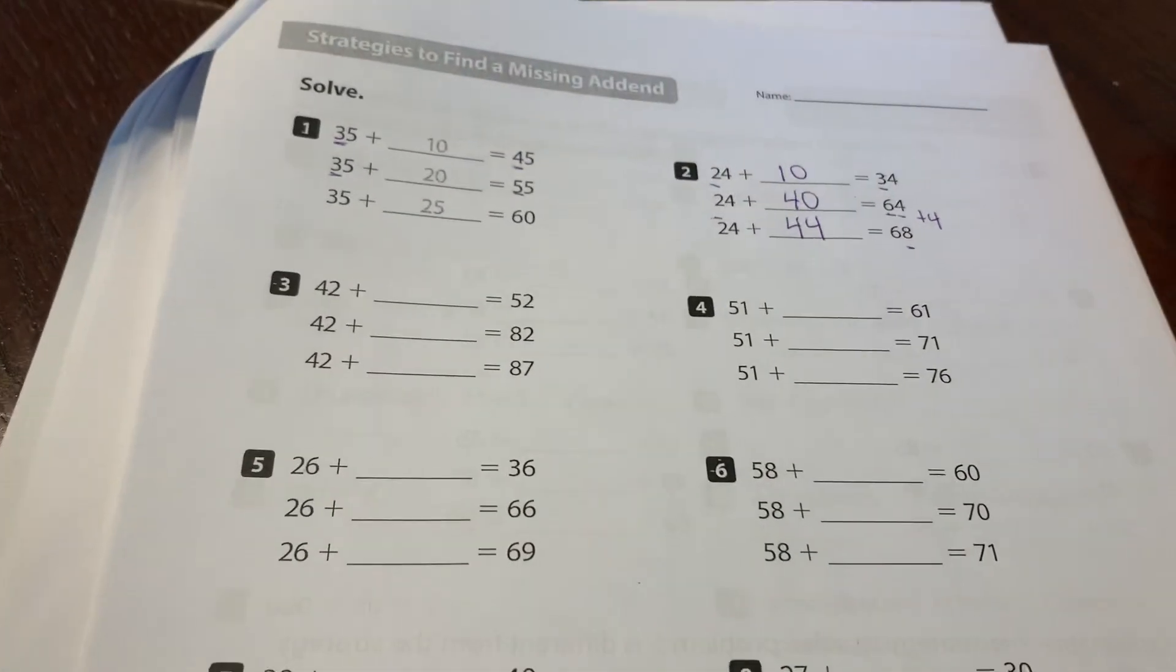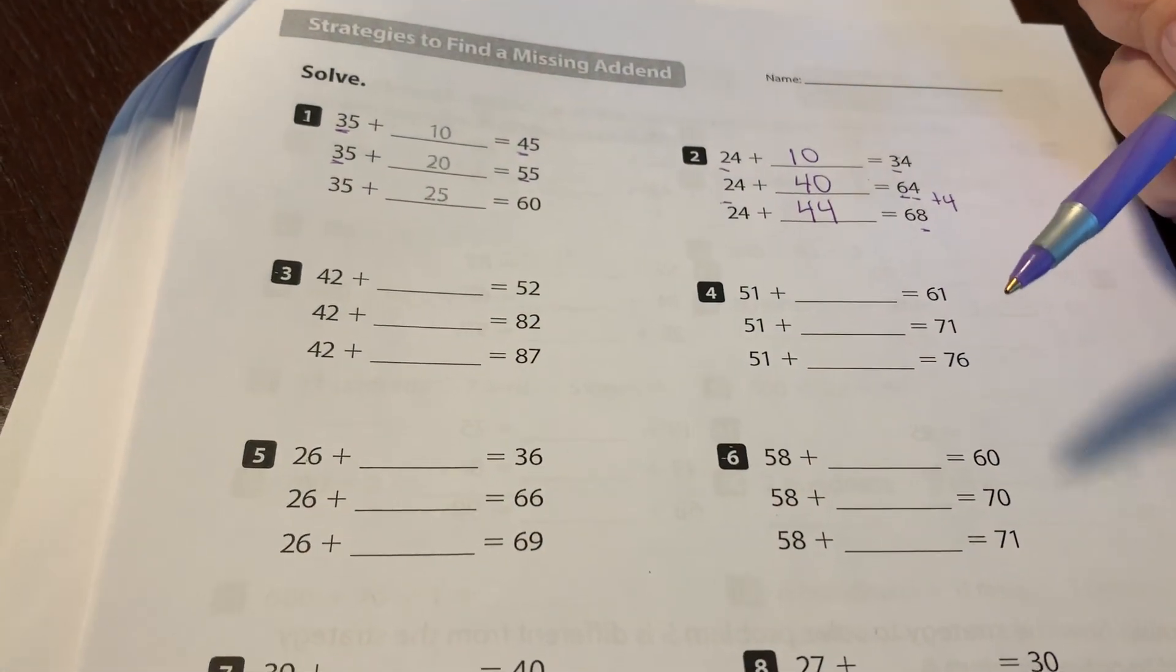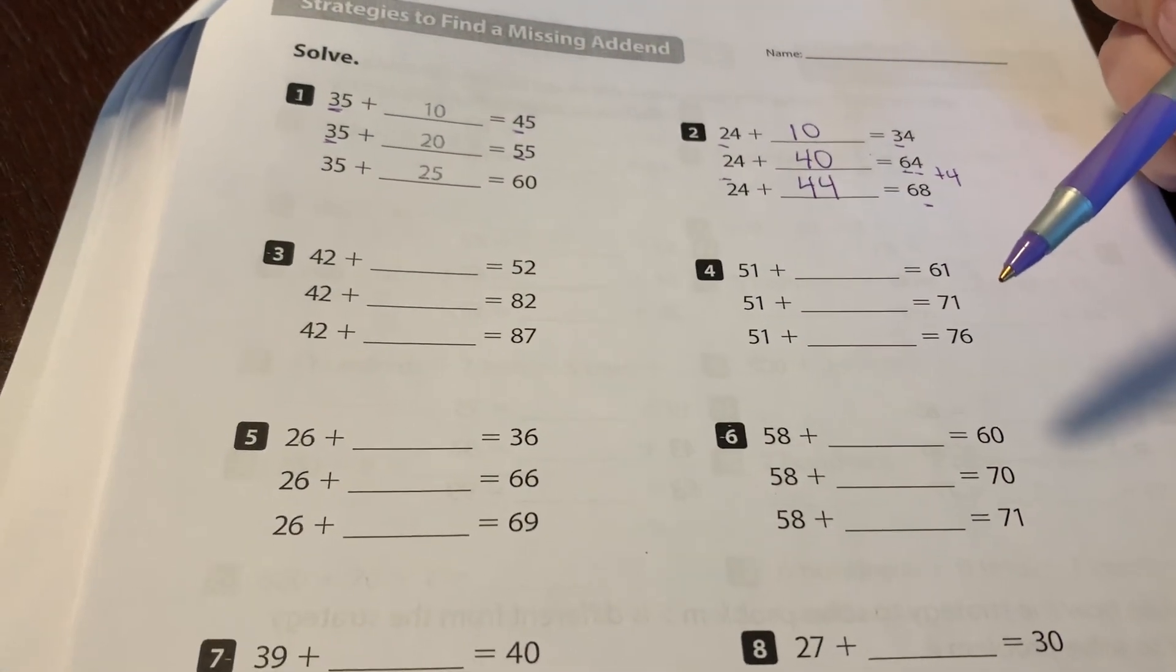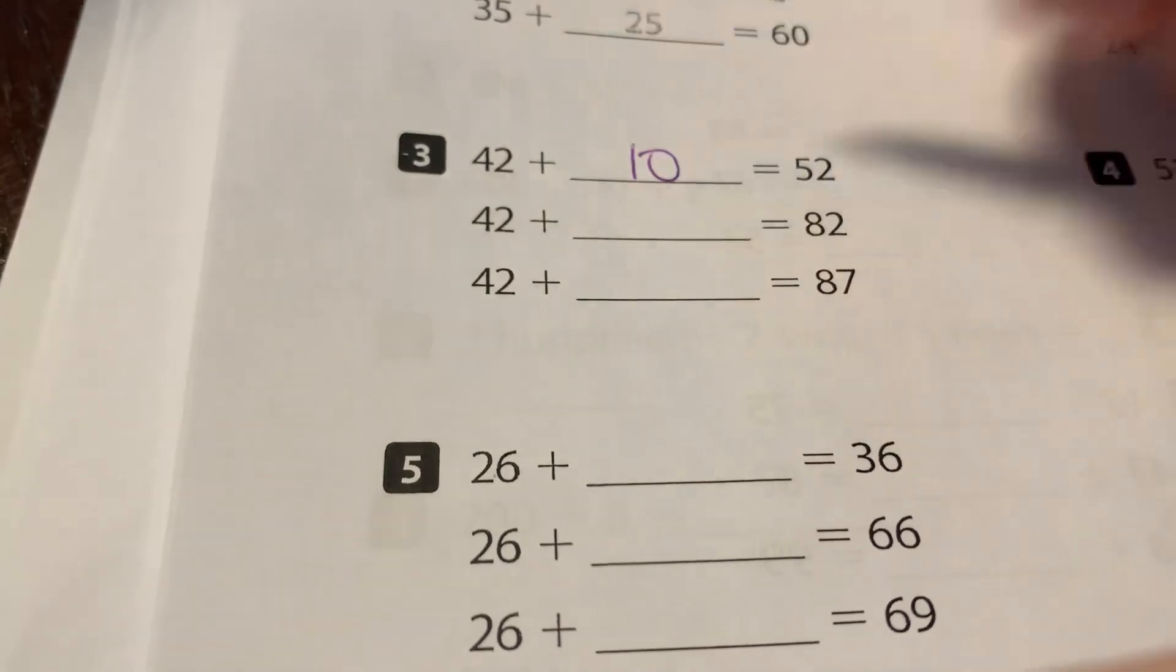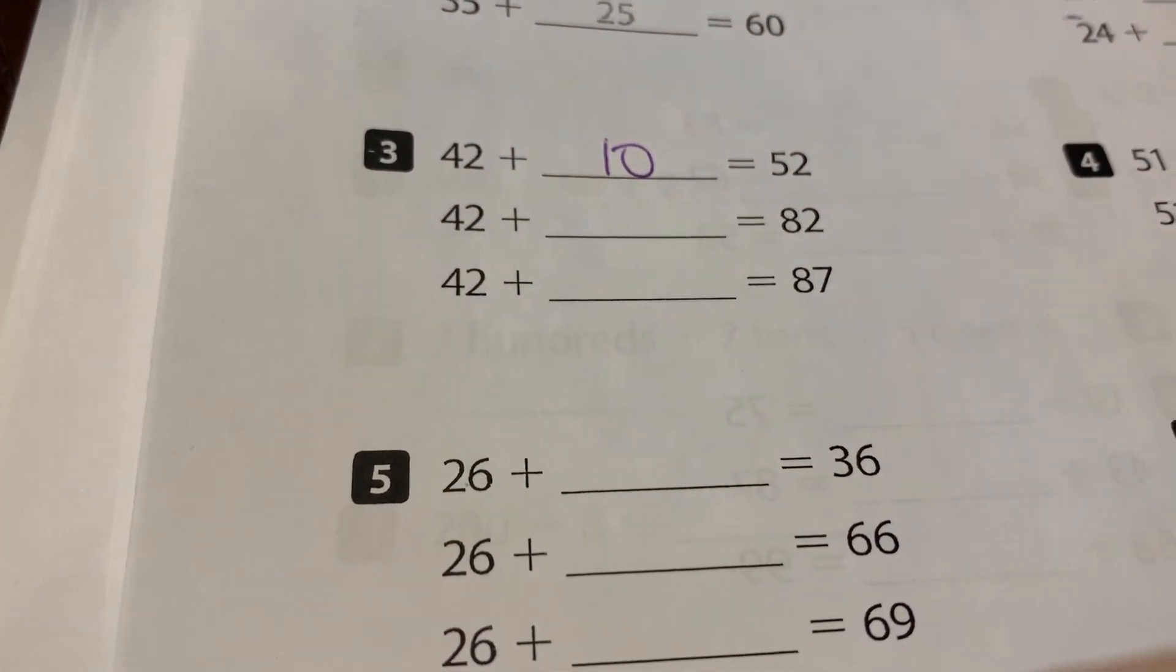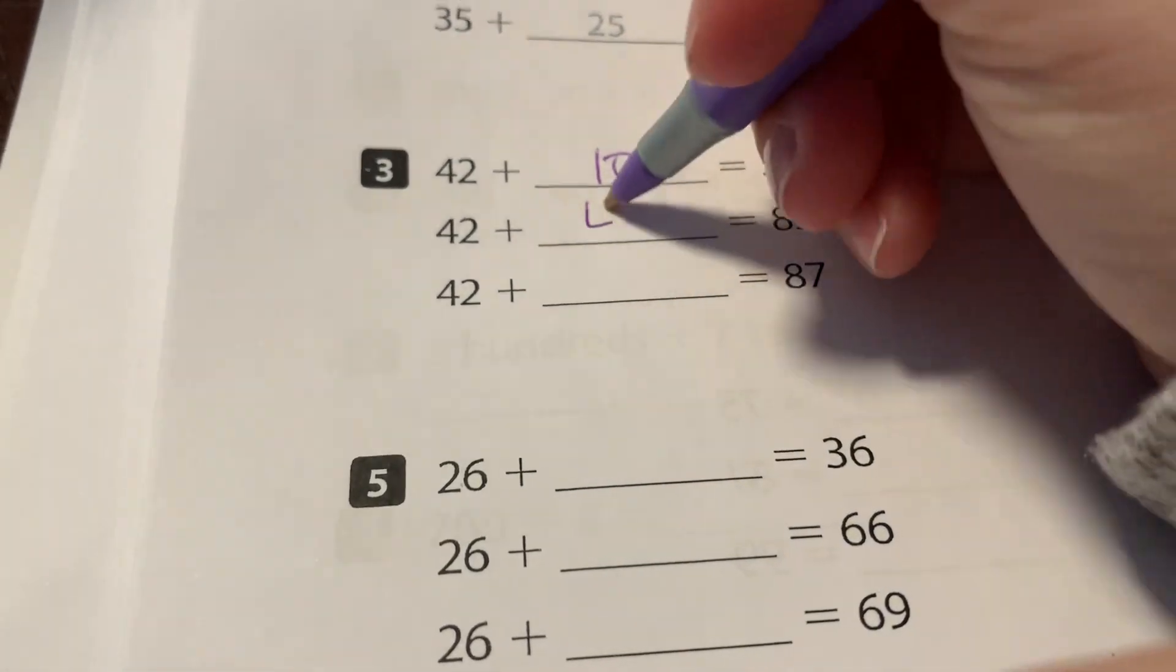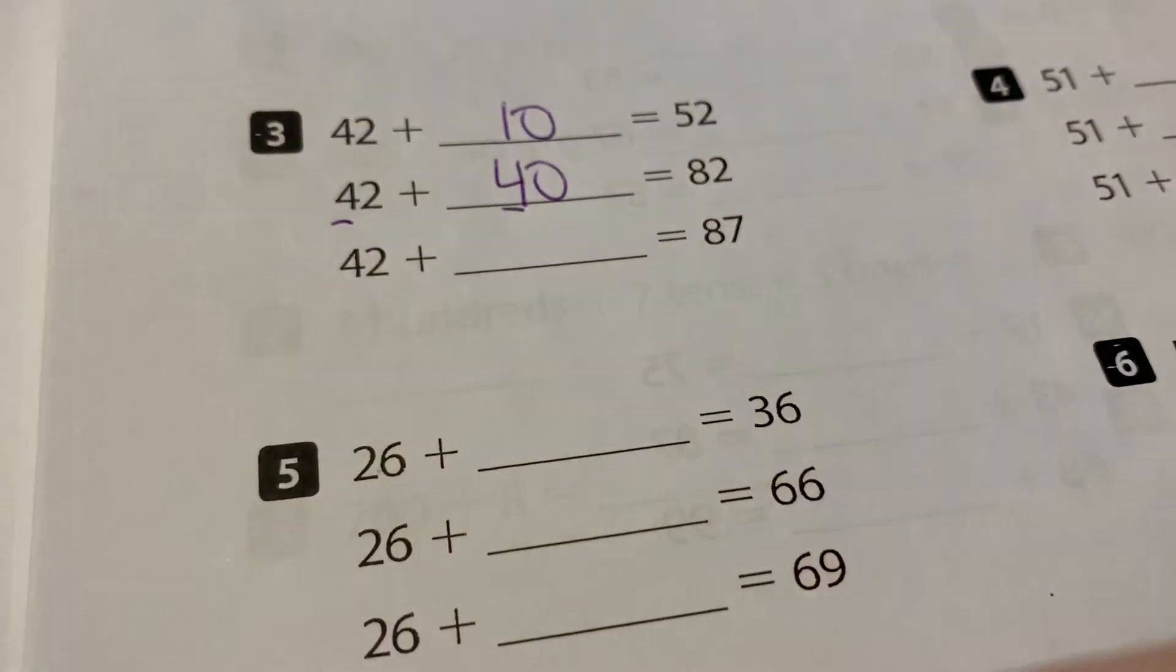Now boys and girls, you can do these problems on your own. I don't think they are that difficult. If you get stuck, I want to show you a strategy for getting stuck. So for example, this one, 42 plus a number is 52. That's going to be 10. Now I need to think 42 plus a number is 82. That's going to be 40 because I know in my tens, four plus four is eight.